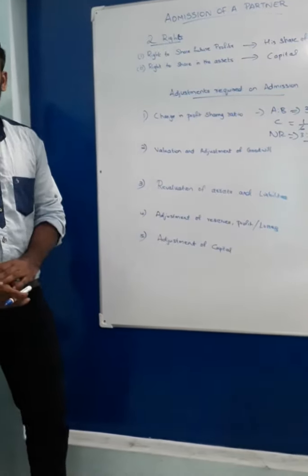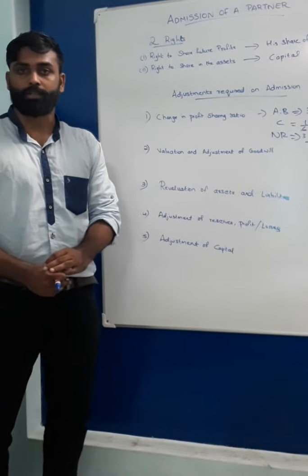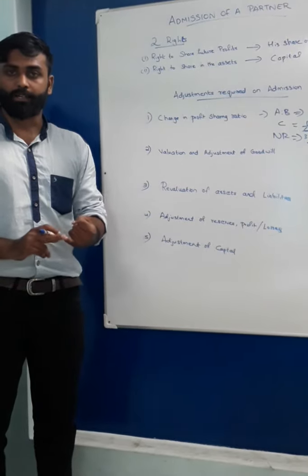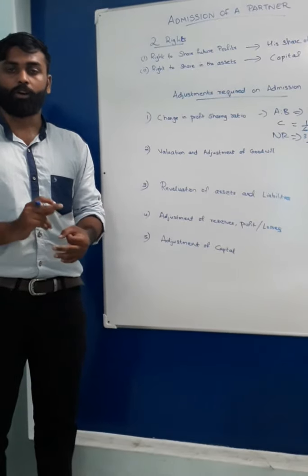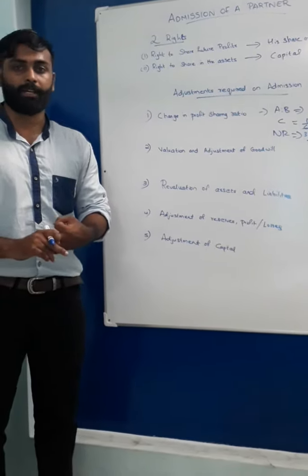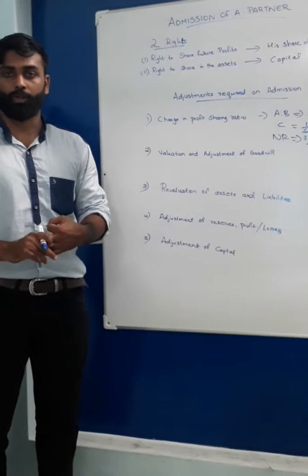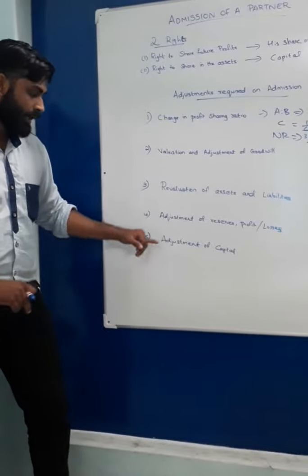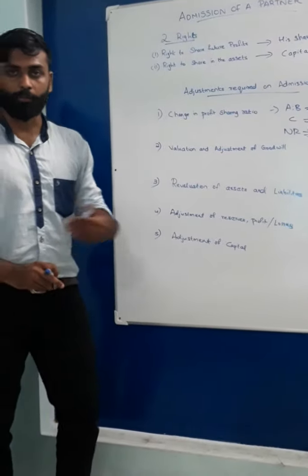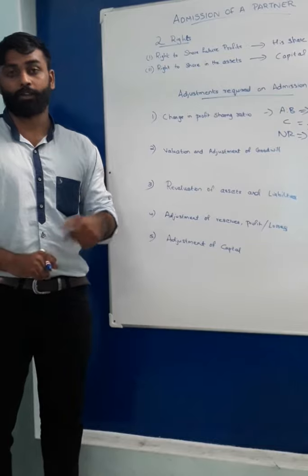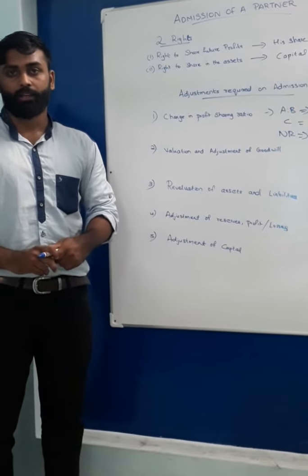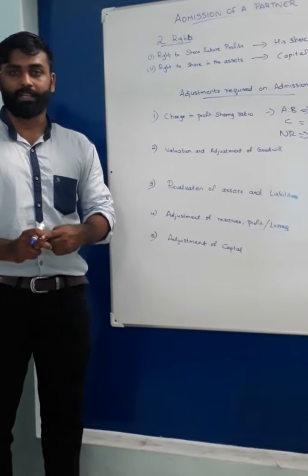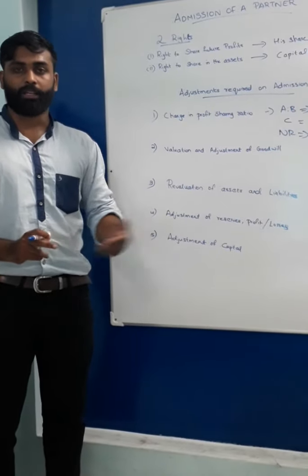The fourth adjustment is adjustment of reserves, profits or losses. When there is any change in profit sharing ratio, all the reserves, profits or losses are to be shared by the partners in the old ratio. We will discuss this again in this chapter. The last new topic is adjustment of capital. There are two types of capital adjustment in this chapter and we will study them in continuation.